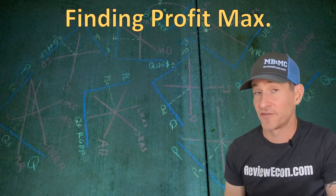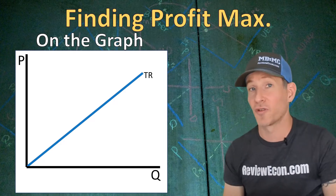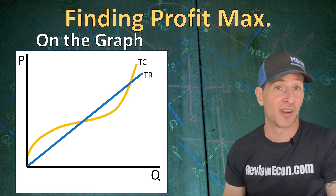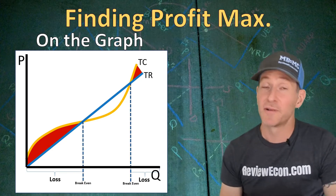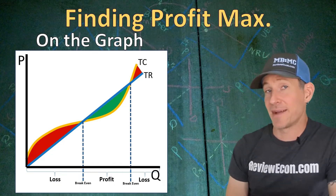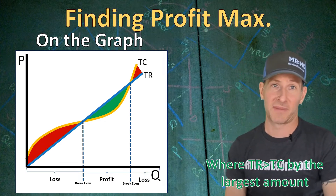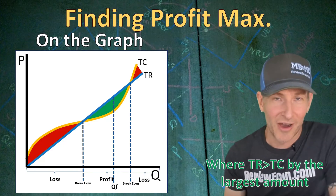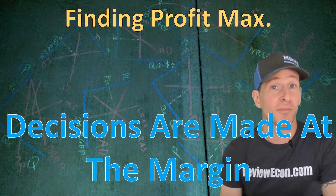Next, we're going to talk about profit maximization — how much output a firm should produce given their costs and revenue. Looking at a graph, we have a total revenue curve and a total cost curve for a firm in a competitive market. Where total cost exceeds total revenue, the firm earns economic losses; where they're equal, the firm breaks even; where total revenue exceeds total cost, we see economic profits. The profit-maximizing quantity is where total revenue is greater than total cost by the largest amount. However, most decisions in microeconomics are made at the margin, not based on totals.